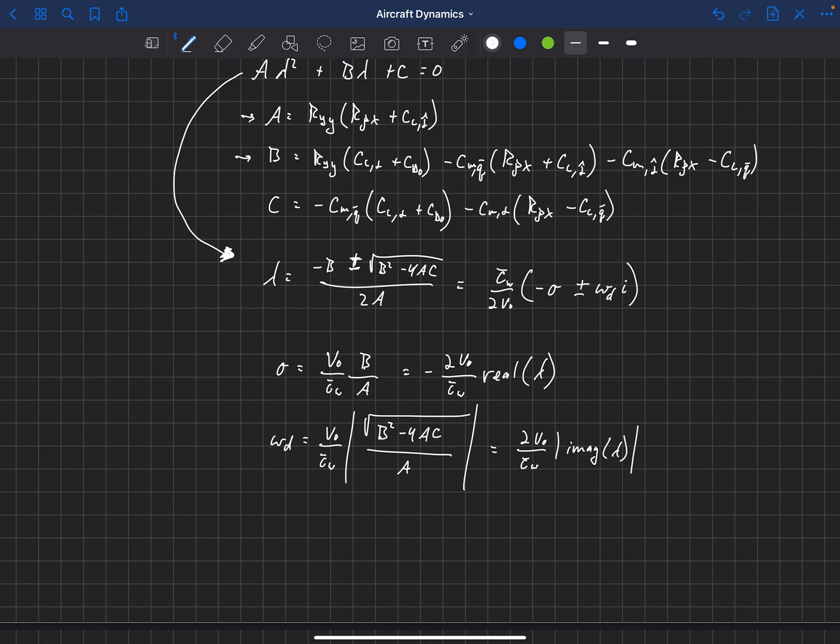So we just got the real portion of lambda, which is this minus B over 2A. When we multiply it by this to make that dimensional, it simplifies to this right here. And then when we took the imaginary portion of lambda, which is this ratio right there, and multiply it by 2 V naught over C bar W, then we end up with this right here. So that's where those two come from.